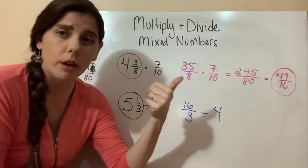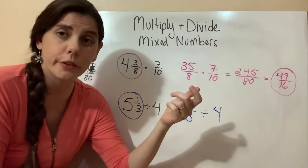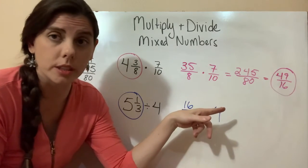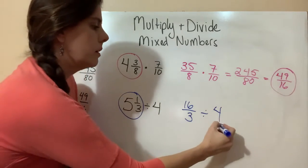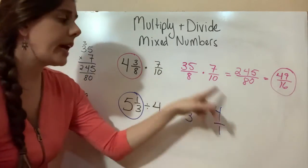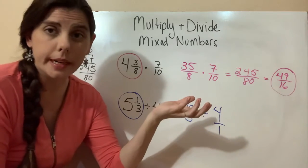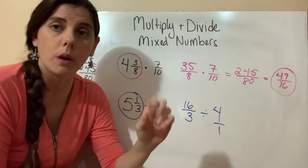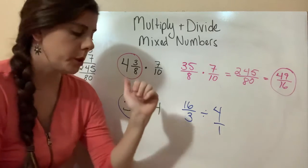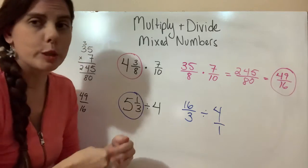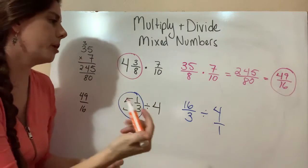If you're using the cross multiplication or the keep-change-flip, it doesn't matter. We have to take this whole number and turn it into a fraction. How do we do that? By adding that fraction bar with a 1 beneath it. Now that we have this whole number represented as a fraction, we can go ahead and either do our keep-change-flip or our cross multiplication. Whichever is easier for you. I'm going to do the keep-change-flip.